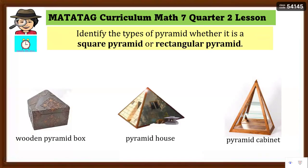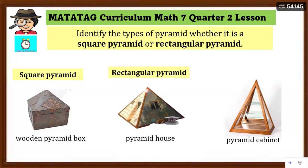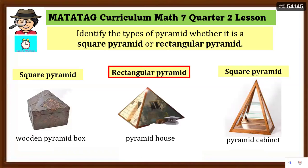Now you can identify the types of pyramid — whether it is a square pyramid or a rectangular pyramid. The wooden pyramid box is a square pyramid. The pyramid house is a rectangular pyramid. And the cabinet is a square pyramid. How do we know? If you observe the bottom surface — the base — the shape of the base of the wooden pyramid box is a square, so it's a square pyramid. The bottom surface of the pyramid house is a rectangle, so it's a rectangular pyramid.